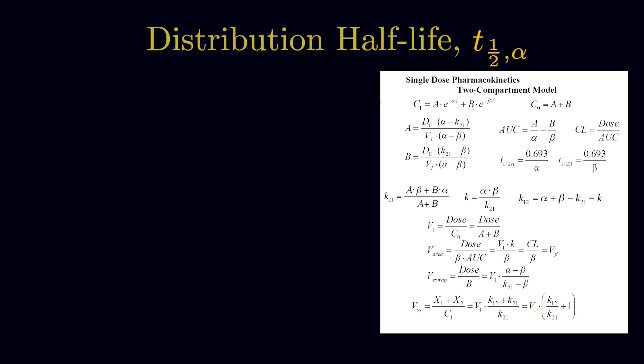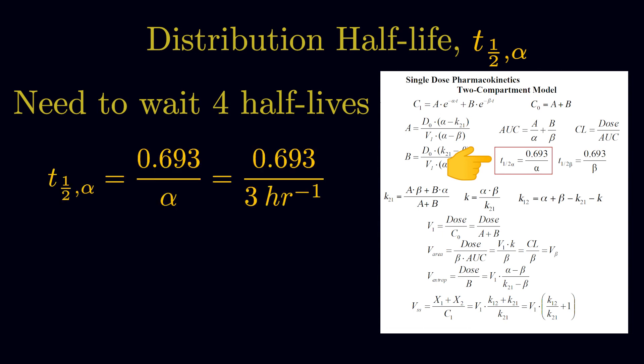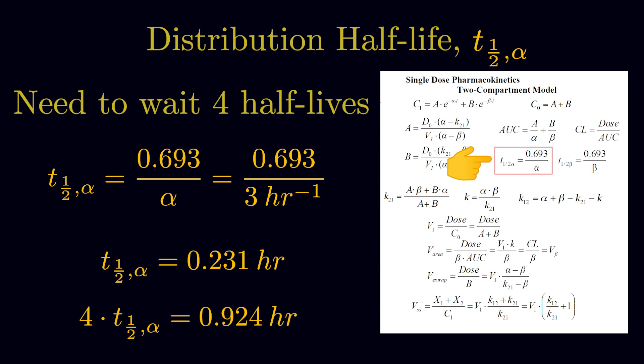Lastly, we want to determine how long after administering an IV bolus you would need to wait for the distribution phase to be mostly complete. Since we need to wait four half-lives for completion of the distribution phase, we use the alpha K, which represents distribution. The half-life equals 0.693 divided by 3, giving 0.231 hours. Four times that equals 0.92 hours until the distribution phase is mostly complete.